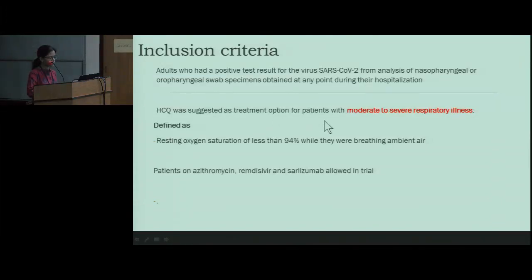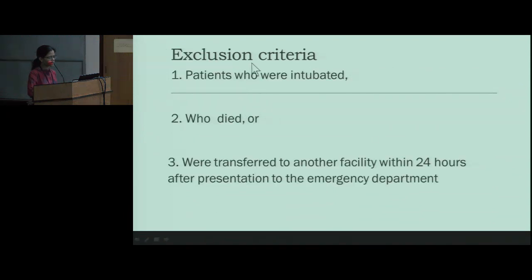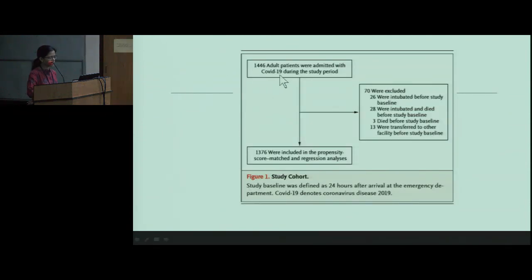Inclusion criteria were adults positive for SARS coronavirus, with HCQ suggested as a treatment option for moderate to severe respiratory illness — defined as resting oxygen saturation less than 94% on ambient air. Patients already on azithromycin, remdesivir, and sarilumab were all included. Only patients excluded were those who got intubated, died, or were transferred to another facility within 24 hours of presentation. In total, 1,446 adults were admitted during the COVID-19 period, of which 70 were excluded, leaving 1,376 included in the propensity score matched regression analysis.